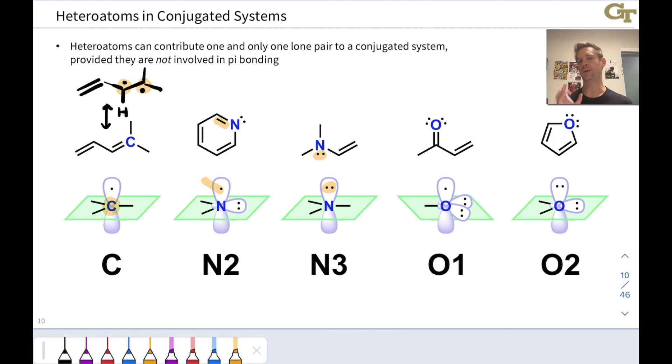I encourage you to pause the video and draw that resonance form now if you need additional practice drawing resonance forms of conjugated systems. You'll want to be able to recognize this resonance very quickly and recognize that that lone pair is part of the conjugated system. So those two electrons contribute to the pi electron count in this structure.